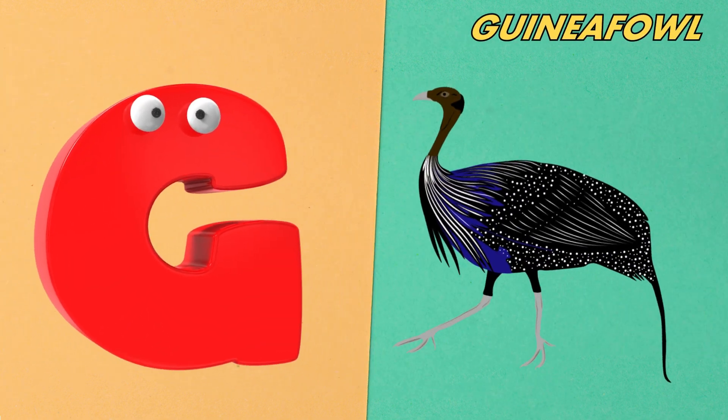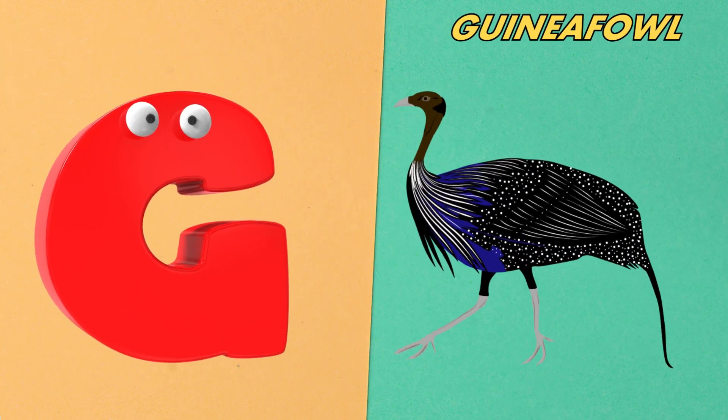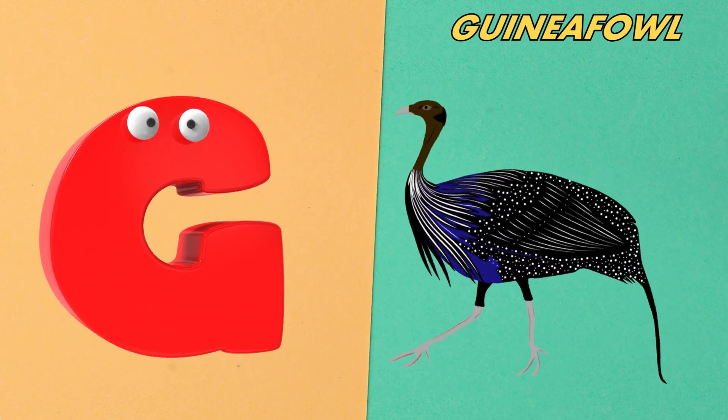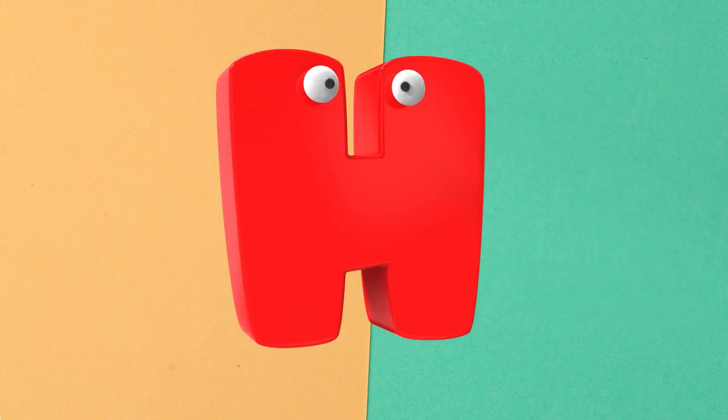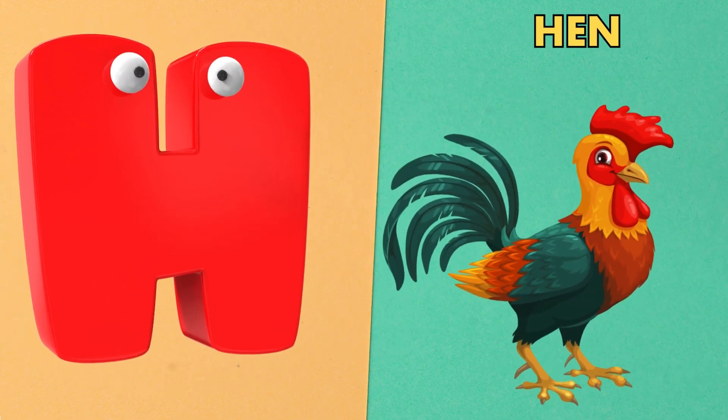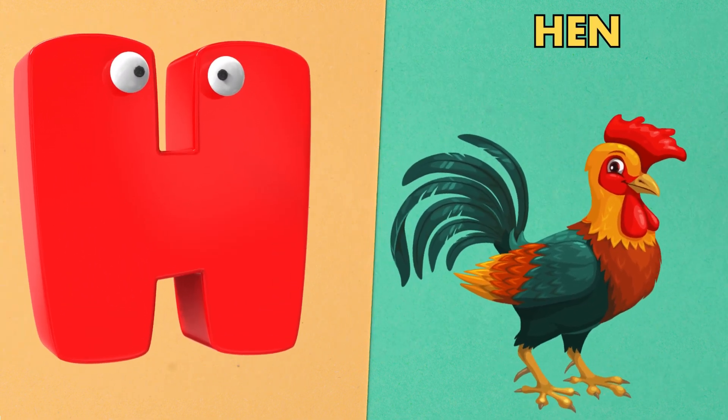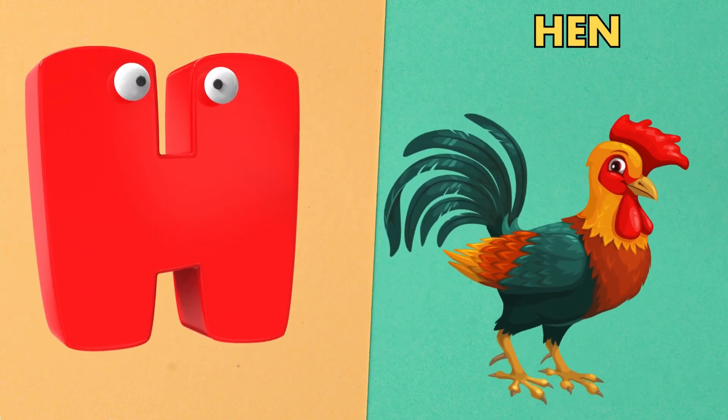G is for guinea fowl. Guinea fowl. H is for hen. Hen.